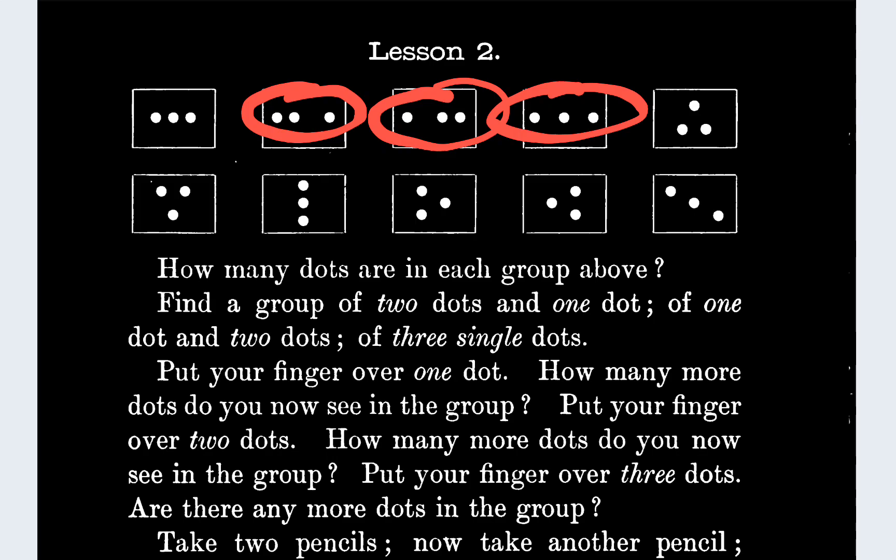Okay, so the next one says put your finger over one dot. I'm gonna pretend that's my finger. Hey, it just filled it in, awesome. How many more dots do you now see in the group? There's two dots, provided that the red dot is my finger.